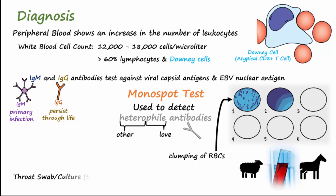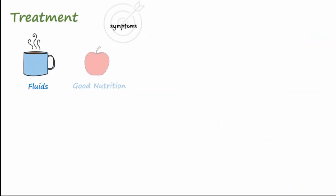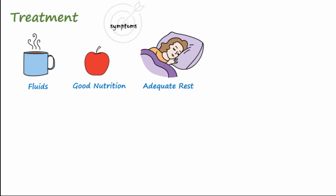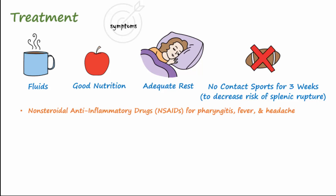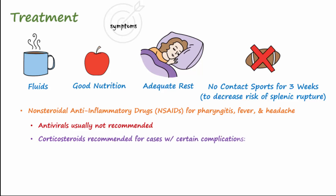Group A strep can be ruled out with a throat swab or a culture for strep. Treatment targets symptoms. Plenty of fluids, good nutrition, as well as getting adequate rest are important for managing symptoms. Avoidance of contact sports for at least three weeks is advised to decrease the risk of splenic rupture. NSAIDs can be taken for pharyngitis, fever, and headache. For most cases, antivirals are not recommended. Corticosteroids are only recommended in cases with certain complications, such as upper airway obstruction, hemolytic anemia, and thrombocytopenia.